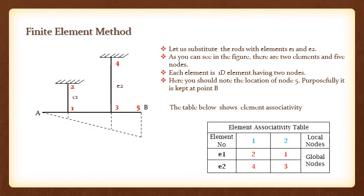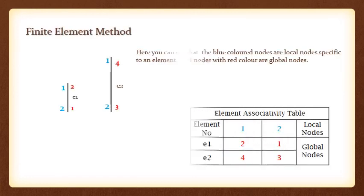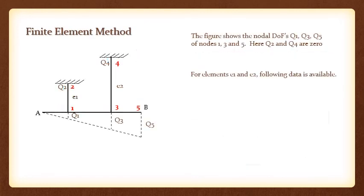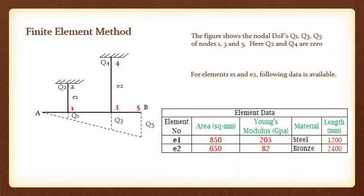Let us substitute the rods with elements E1 and E2. As you can see in the figure, there are two elements and five nodes. Each element is a 1D element having two nodes. The table shows the element associativity. The table shows the element data.